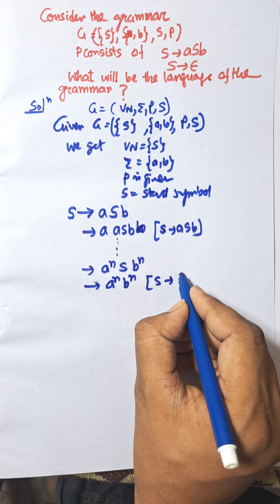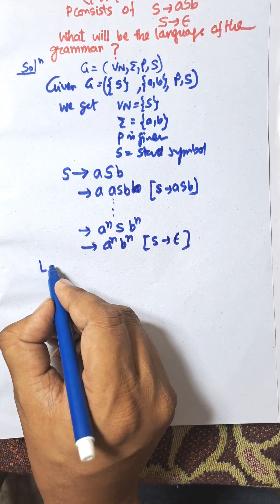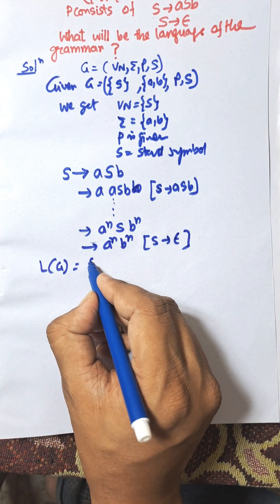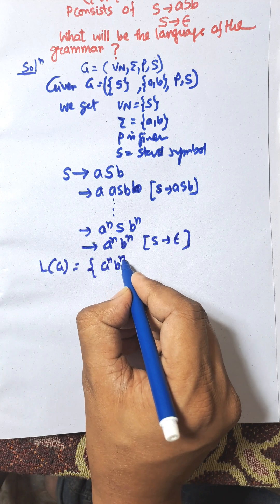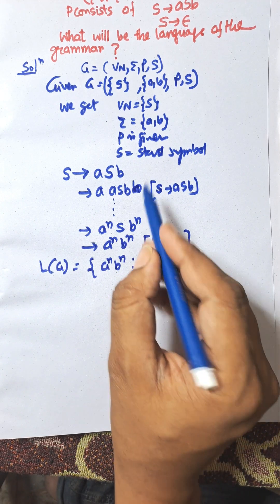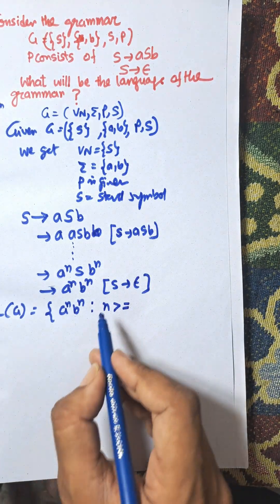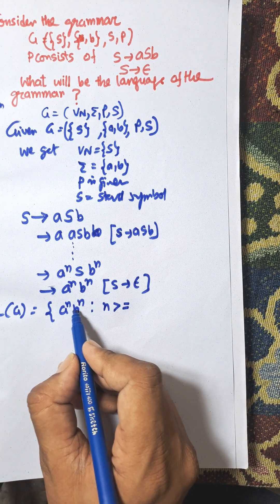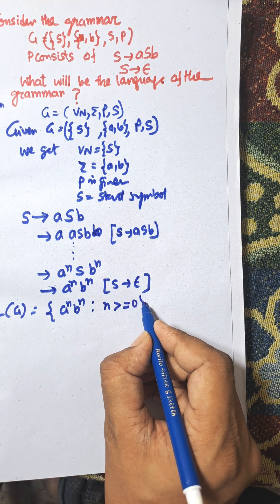Now the language is L(G) equals {a^n b^n such that n >= 0}. This is the very important thing here: S creates an empty symbol, so when n equals zero that will be empty, so n starts from zero.